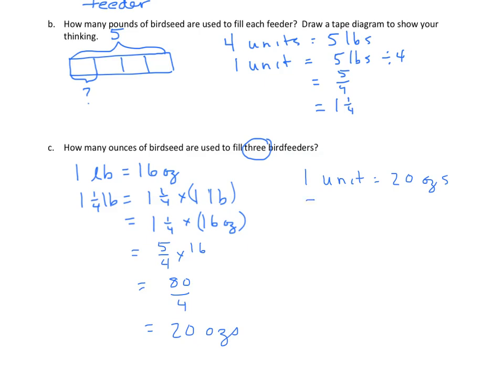We need three. So that's twenty ounces times three which equals sixty ounces. So again we need to make the statement sixty ounces of bird seed are used to fill three bird feeders.